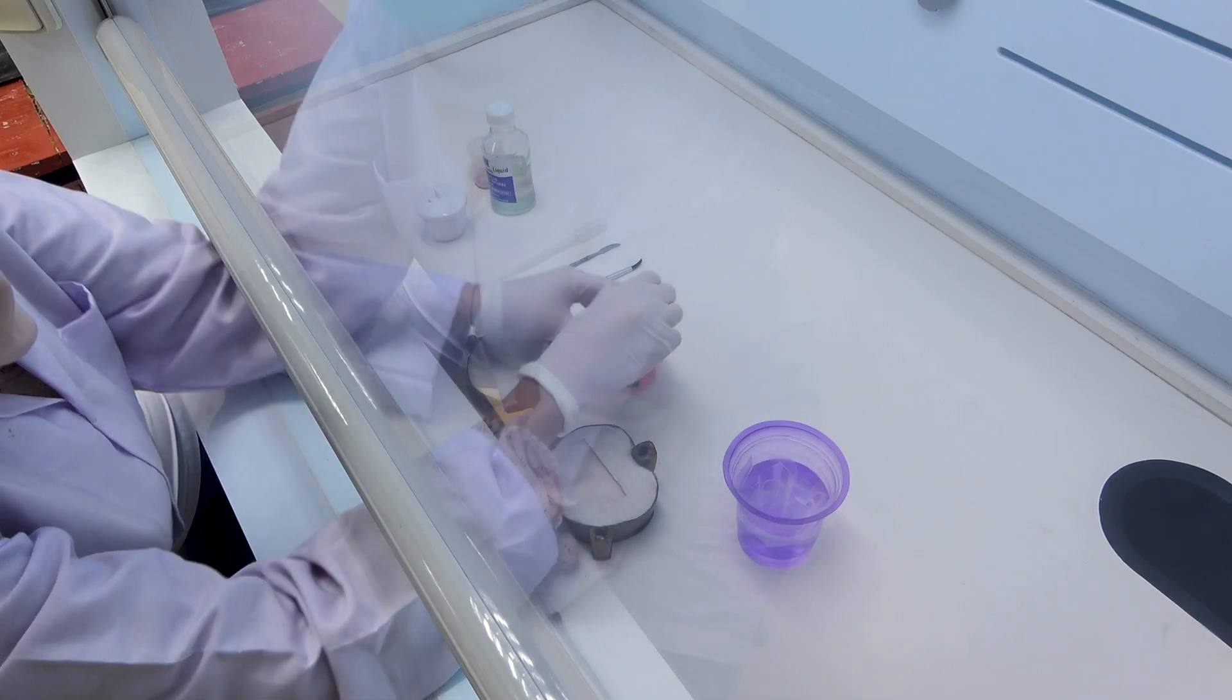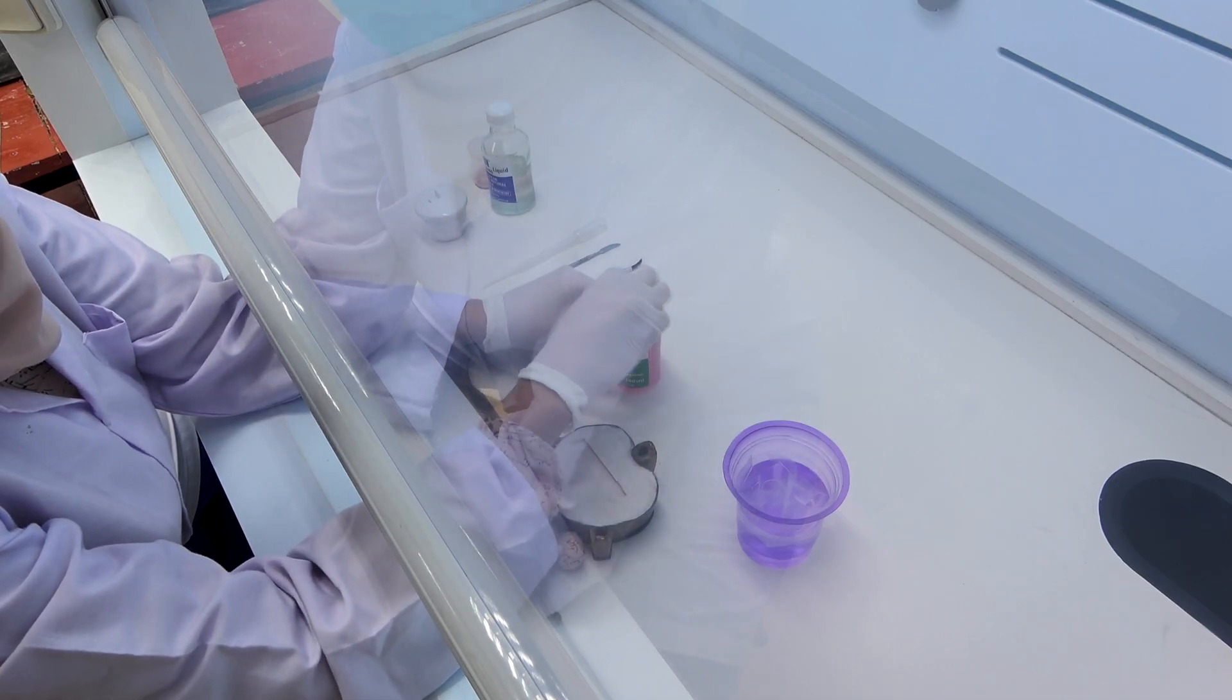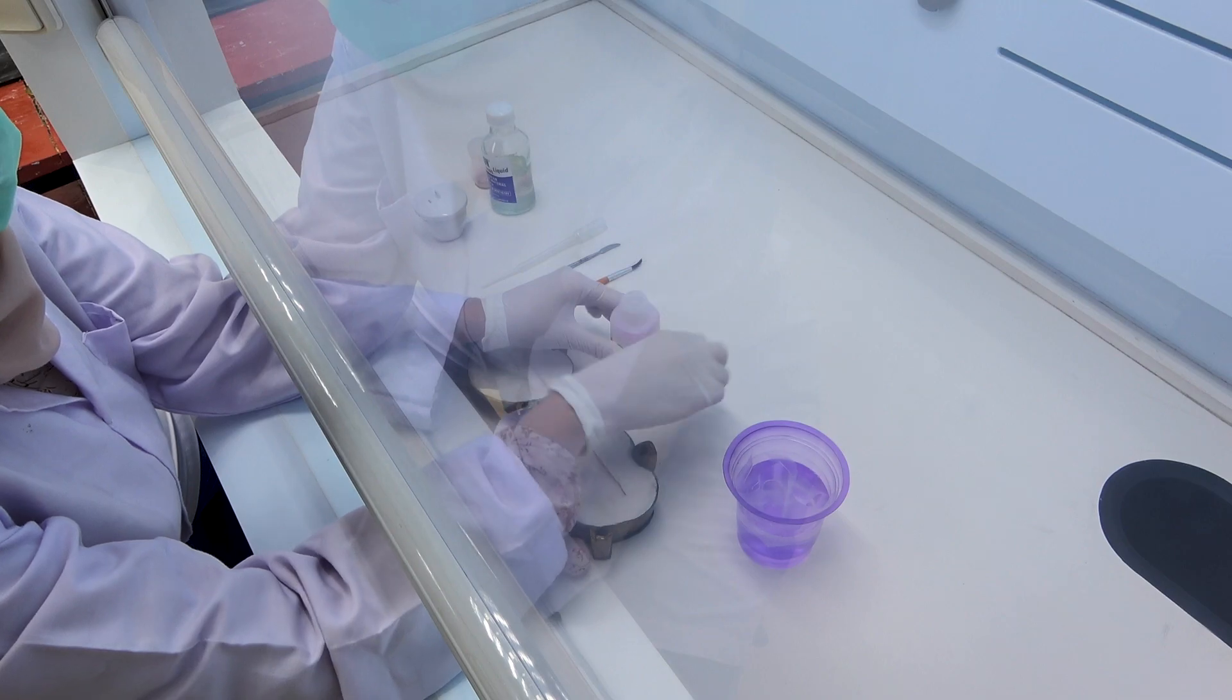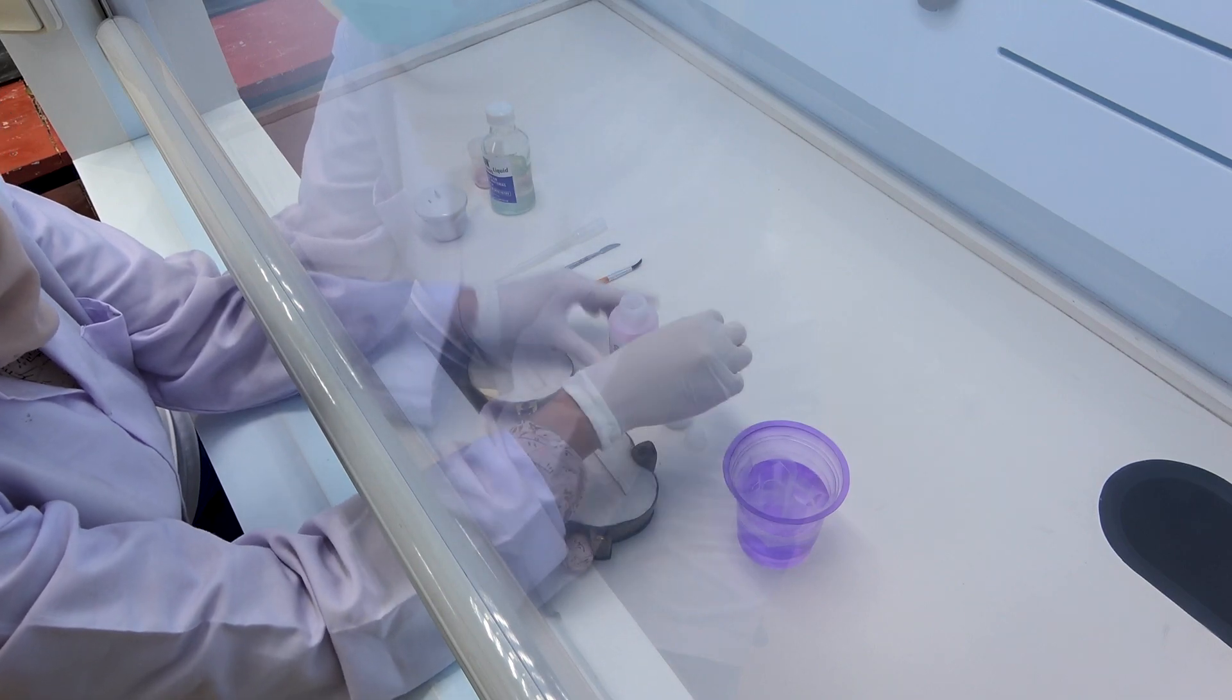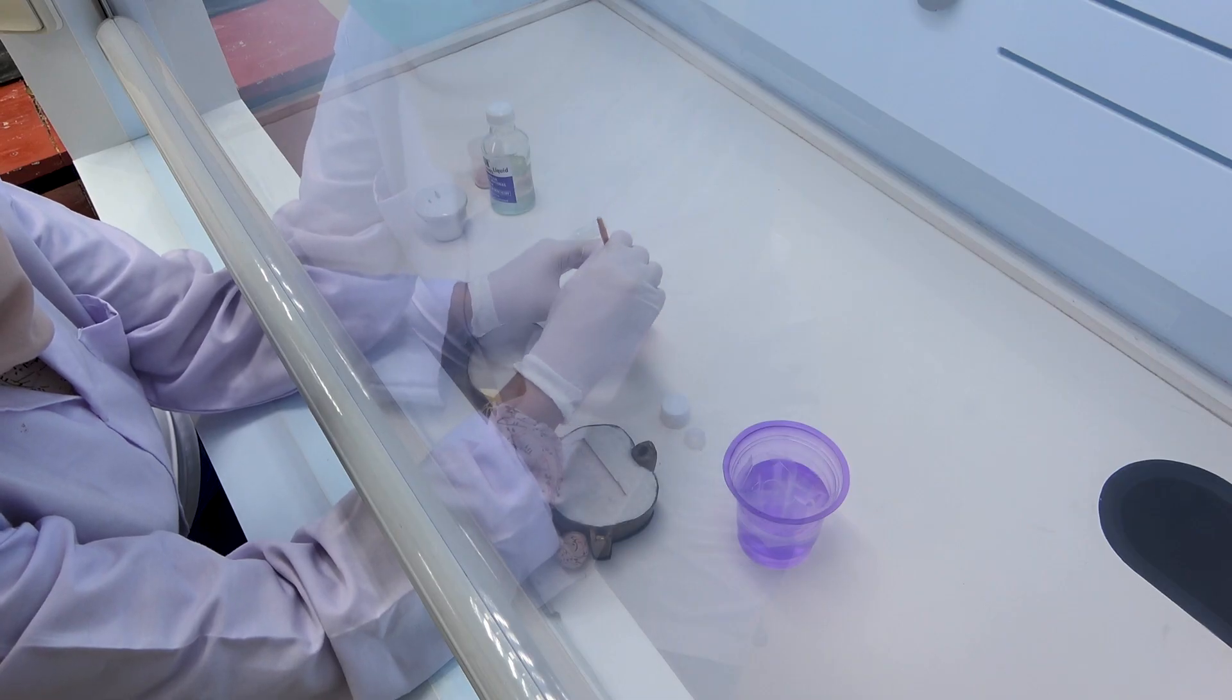First, apply CMS evenly to the gypsum mold on the upper and lower flask using a small brush with unidirectional strokes, and let it dry.